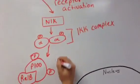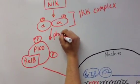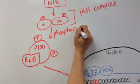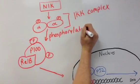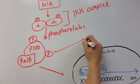The IKK-alpha complex, in turn, phosphorylates the IKB domain of P100, leading to the liberation of P52-REIB.